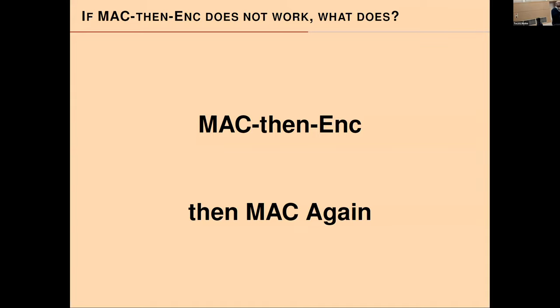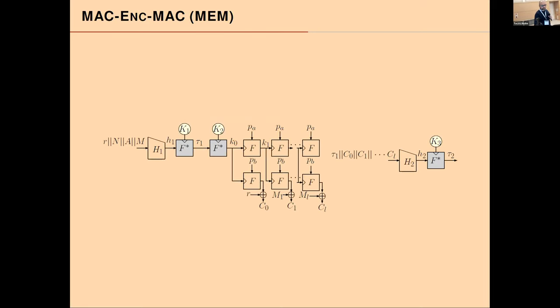The solution is to start from their construction but add a second MAC at the end. The full construction has one MAC, then encryption, then another MAC that takes the first tag and the ciphertext as inputs. These primitives also have leakage-resilient properties, so we expect security against side channels too, though combined fault-and-leakage security has not yet been studied.